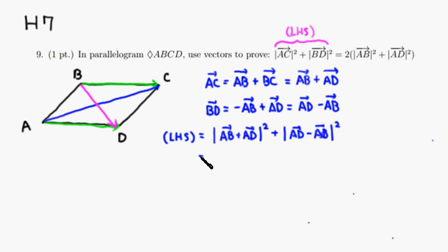Remember that the norm squared is the same thing as just a dot product with itself. So you can do a dot product. So vector AB plus vector AD, and then you do a dot product with itself. You have AB plus AD.